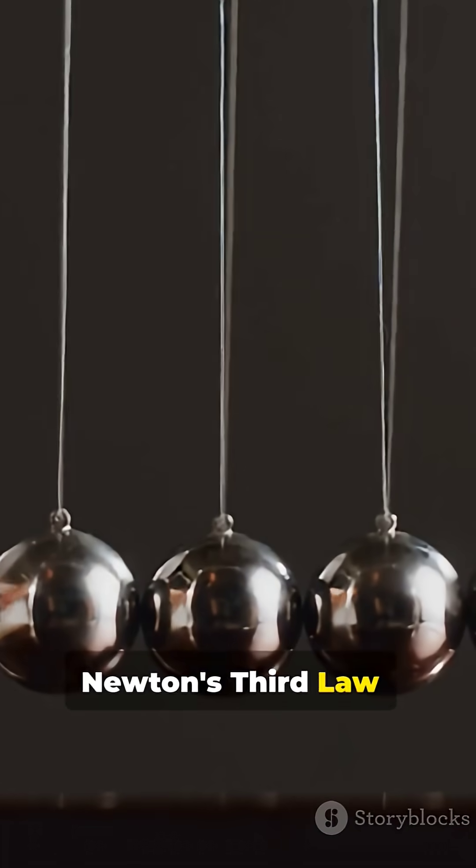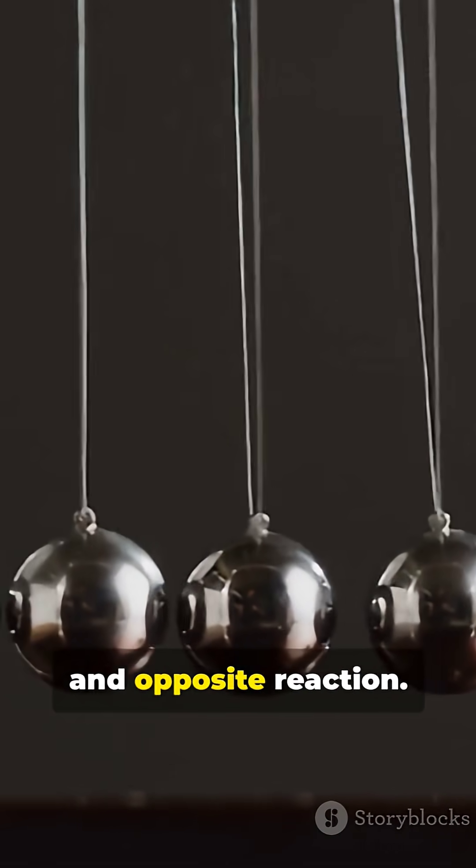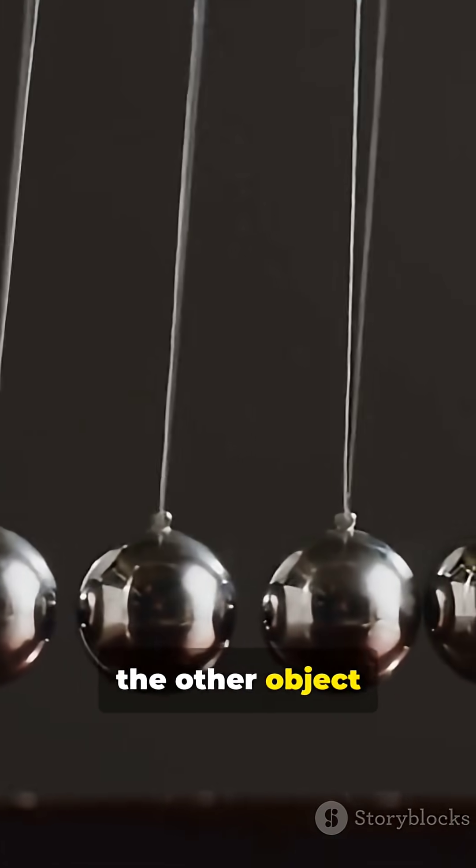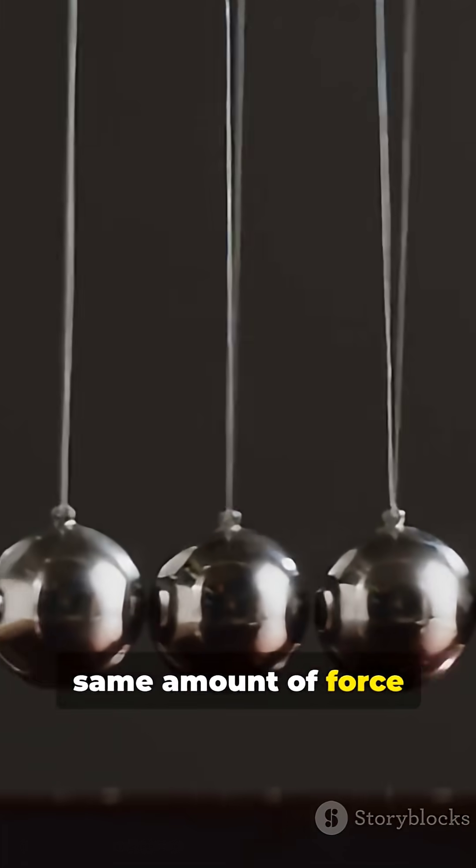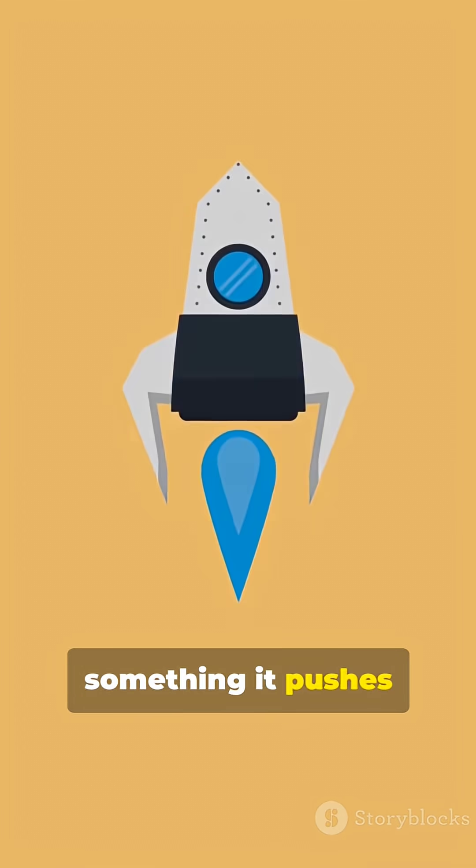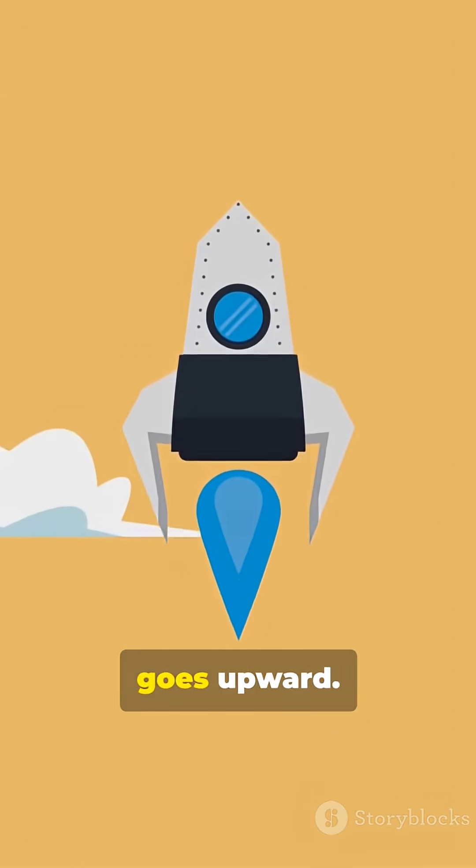Number three is Newton's third law, action and reaction, which says every action has an equal and opposite reaction. Whenever you apply a force, the other object pushes back with the same amount of force in the opposite direction. For example, when you push something it pushes back equally. When a rocket releases gas downward, the rocket goes upward.